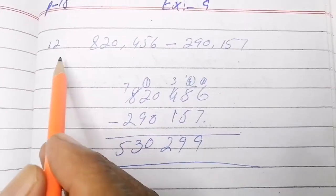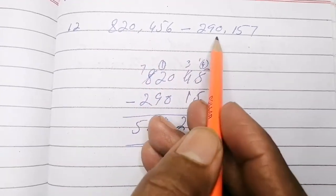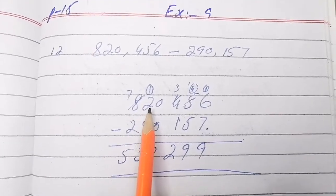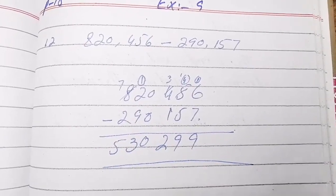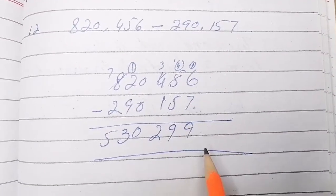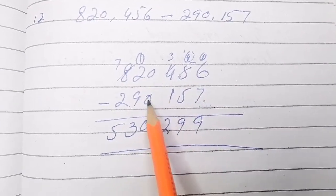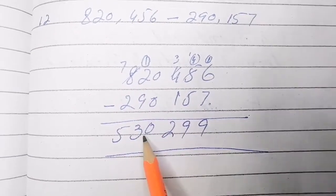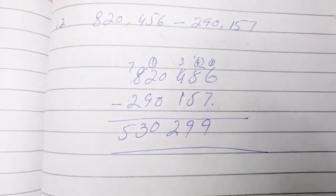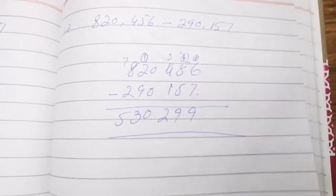Question number 12: 820456 minus 290156. Write the bigger number on top and the smaller on the bottom. 6 minus 7 requires a carry: 16 minus 7 is 9; 14 minus 5 is 9; 3 minus 1 is 2; 0 minus 0 is 0; 12 minus 3 is 9; and 7 minus 2 is 5. That completes Exercise 9. You can do the remaining parts yourself.